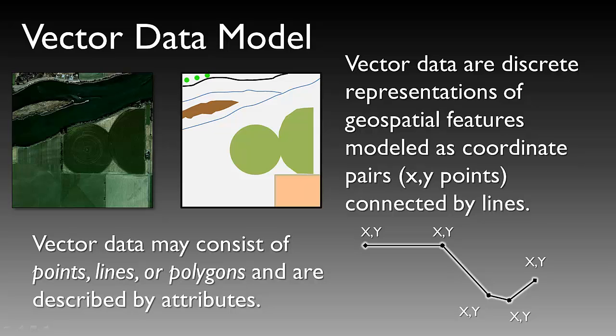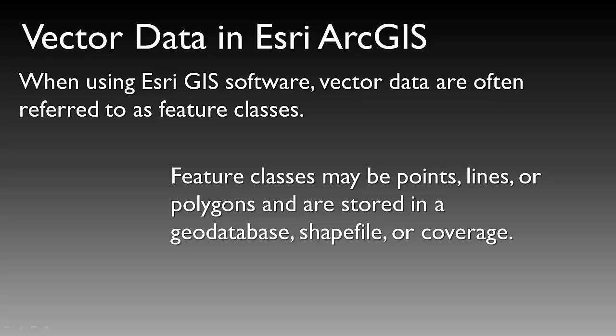Vector data types are described by attributes. Within the Esri ArcGIS format, vector data is often referred to as feature classes, which are also points, lines, or polygons. These feature classes may be stored in a geodatabase, a shapefile, or historically what we would call a coverage, though we don't use coverages all that often anymore.